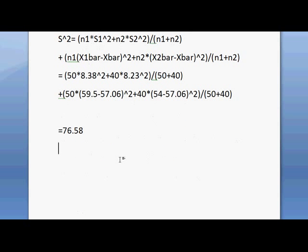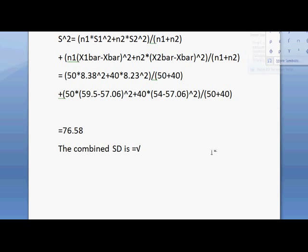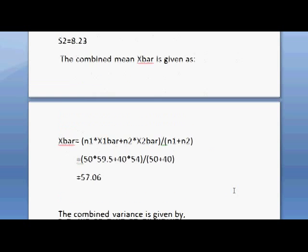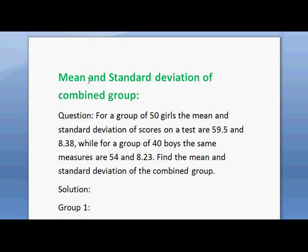Now we can find the combined standard deviation. The combined standard deviation equals the square root of the variance: √76.58 = 8.75. In this way, you can find the pooled mean and standard deviation for the combined group. Thank you.